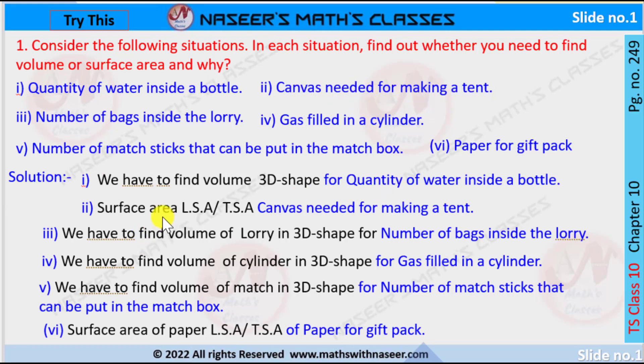Second one: canvas needed for making a tent. We have to find the surface area, LSA or TSA, of canvas needed for making a tent.